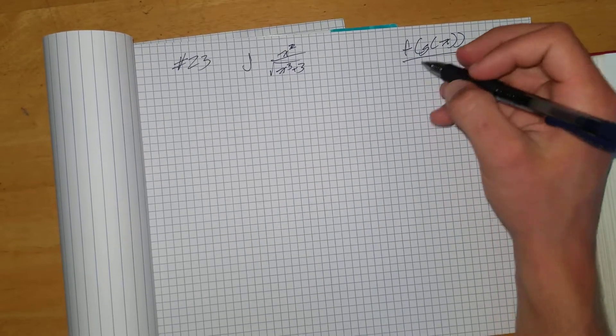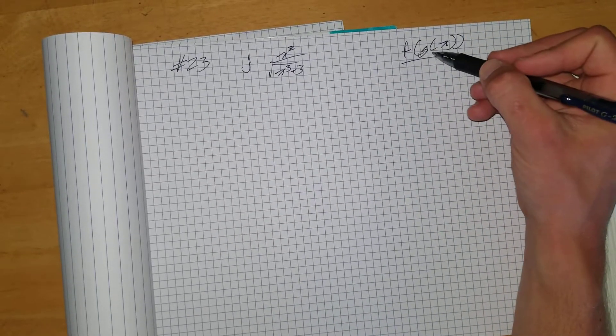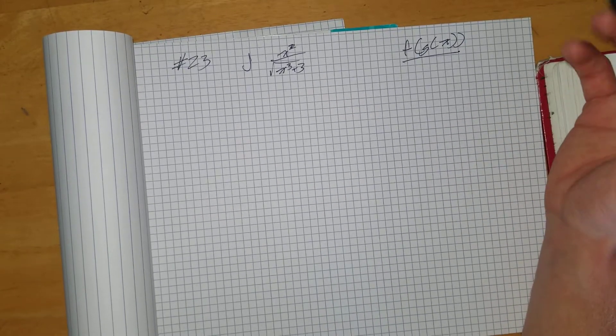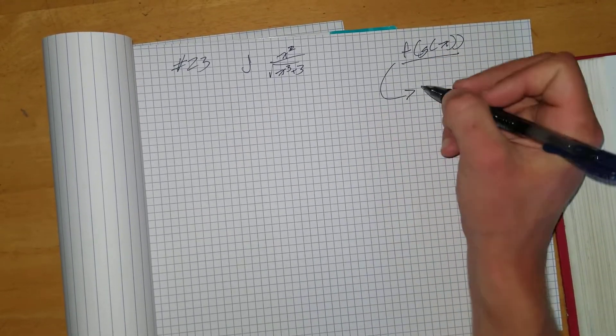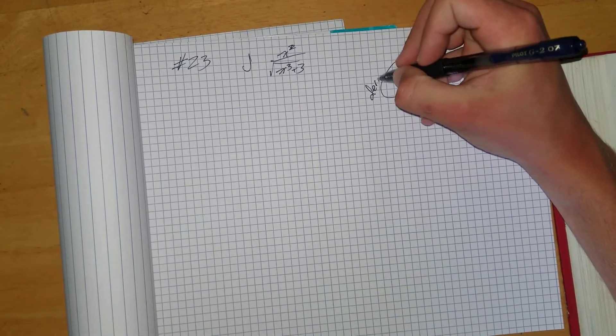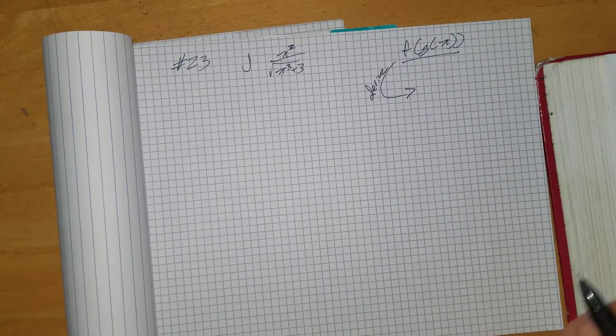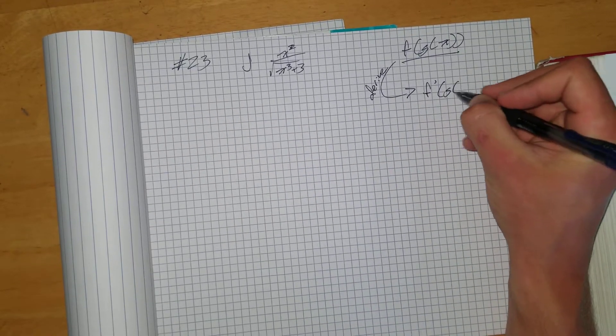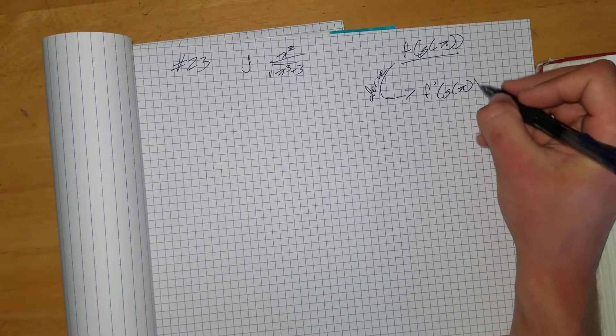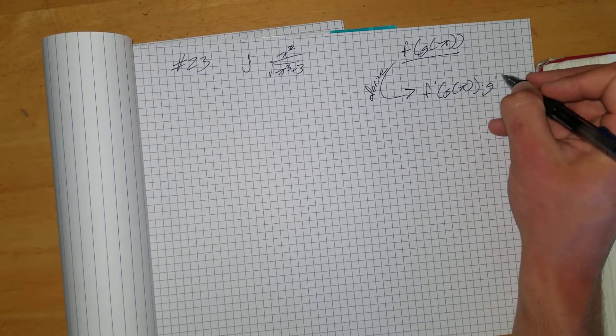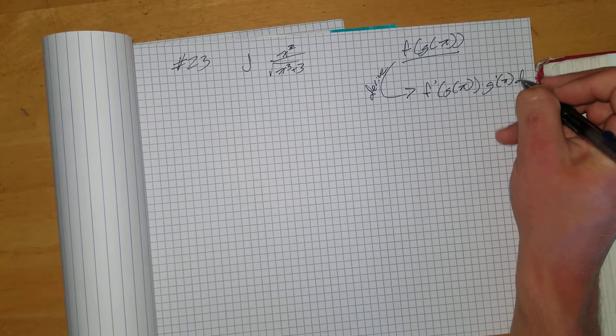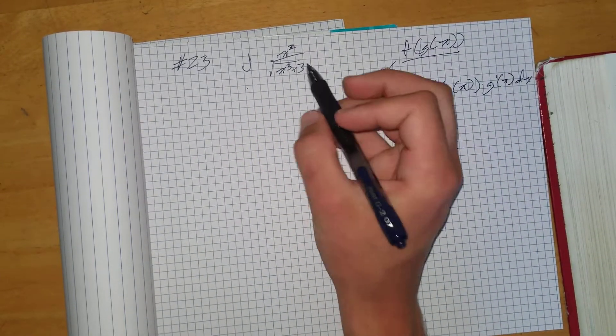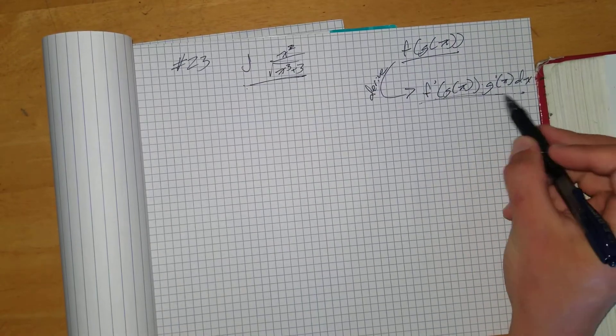So when we're integrating a composite function, it doesn't actually look like this. It looks like the function after we've derived it. So when we derive a composite function, if you remember this, it's going to look like this: x times the derivative of g of x dx, right? So basically, this is in this form.